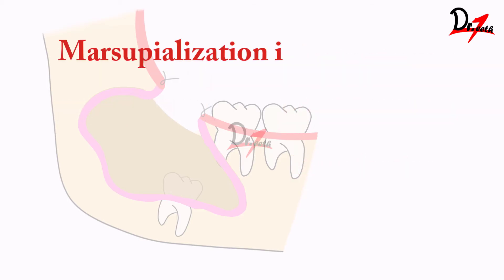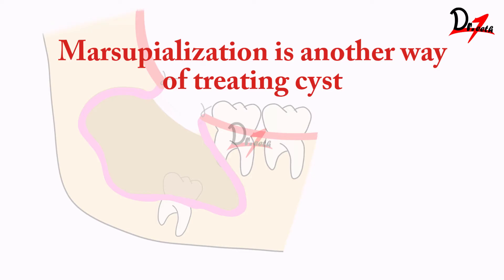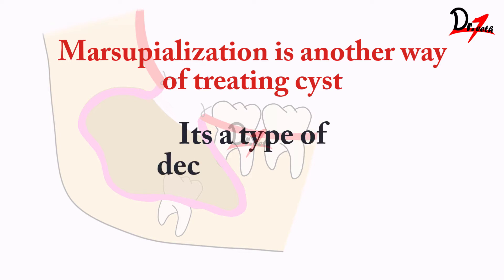Marsupialization is another way of treating cysts. Basically what we do here is we create an opening in the cyst and we evacuate all the contents — that is decompression. Marsupialization is a type of decompression. It is not decompression as such, but it is a type of decompression because here also we are removing the cystic content and relieving the pressure so that the bone can grow.